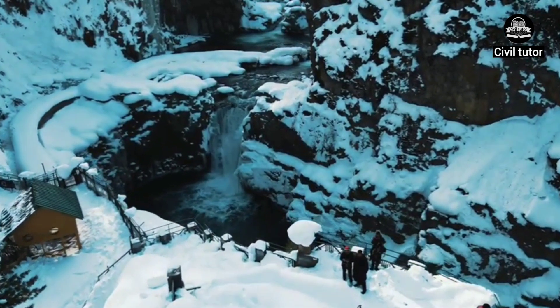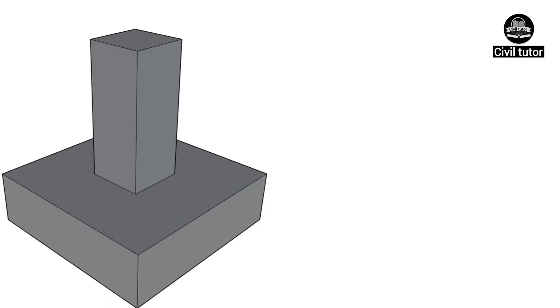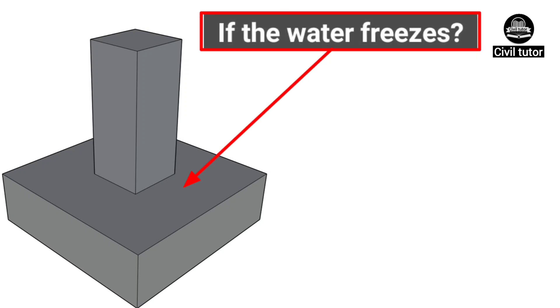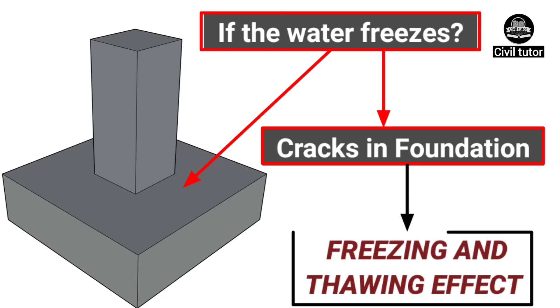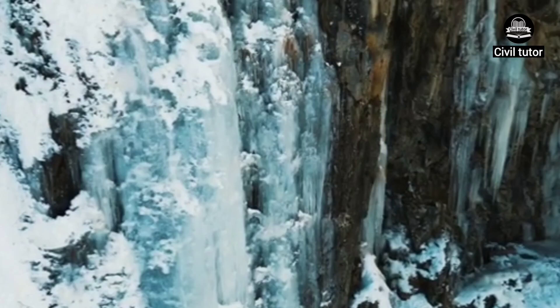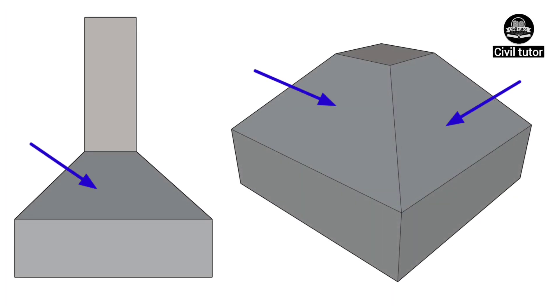Also, in regions with cold climates and freezing temperatures, if the water retained on the surface of the footing freezes, it can cause additional pressure and cracks in the foundation. This is called the freezing and thawing effect, which occurs when the concrete is saturated with water and the drop in temperature leads to the freezing of water molecules. Since frozen water expands up to 9% of its original volume, it causes distress to the concrete. Hence, we provide sloped surfaces to avoid the accumulation of water over the footing.